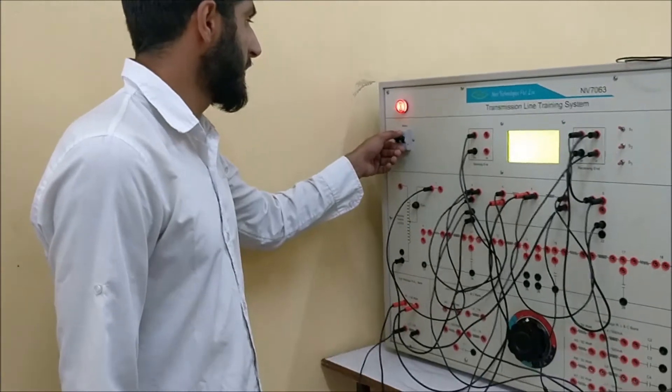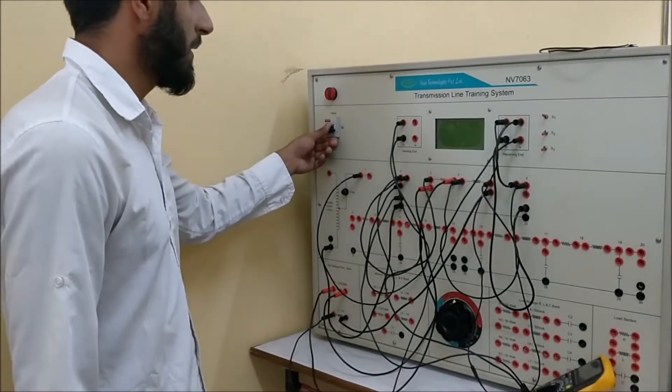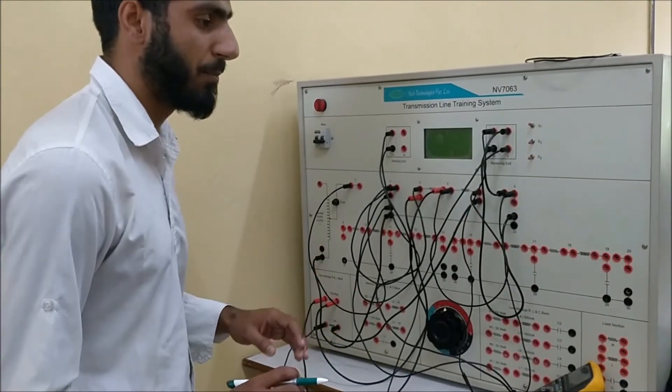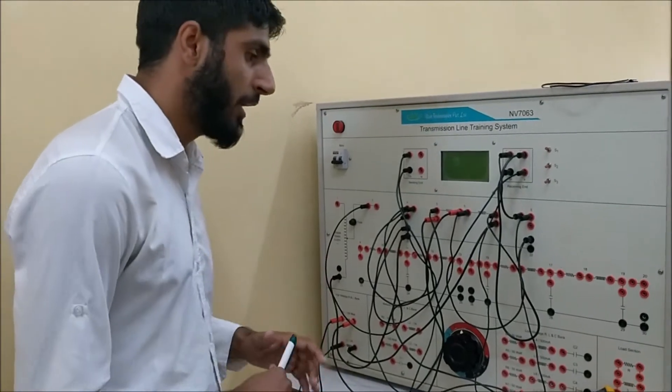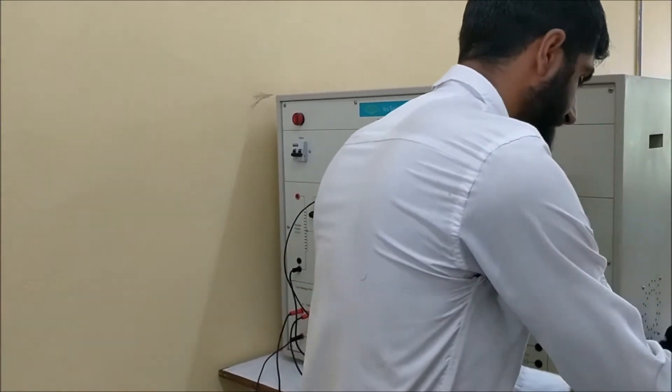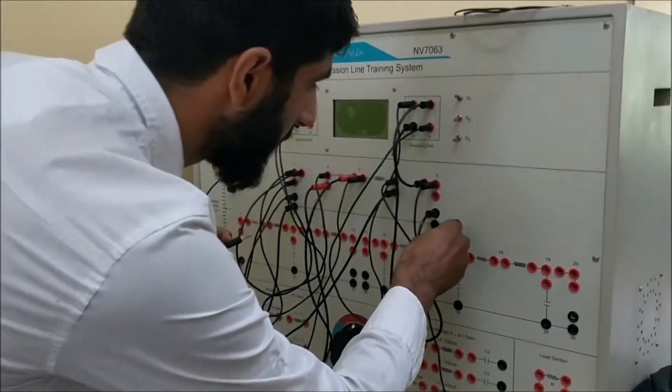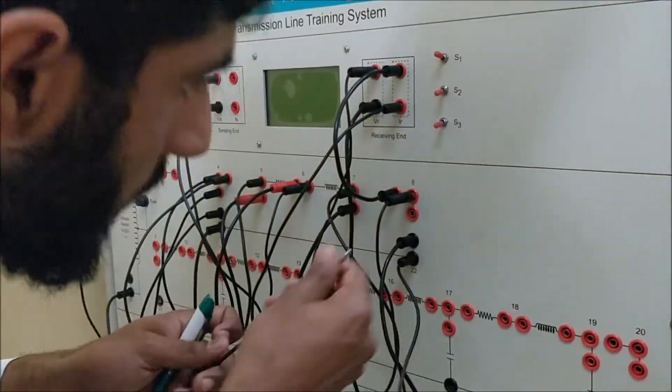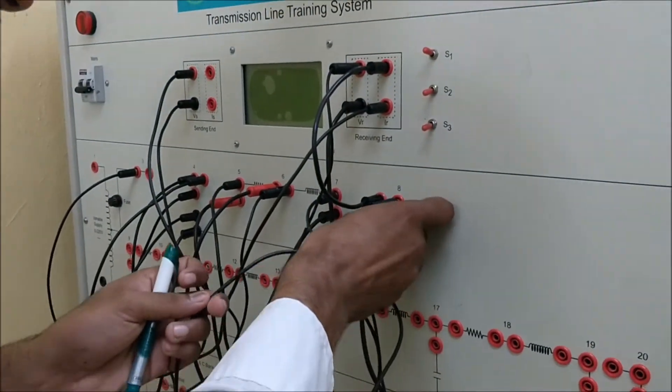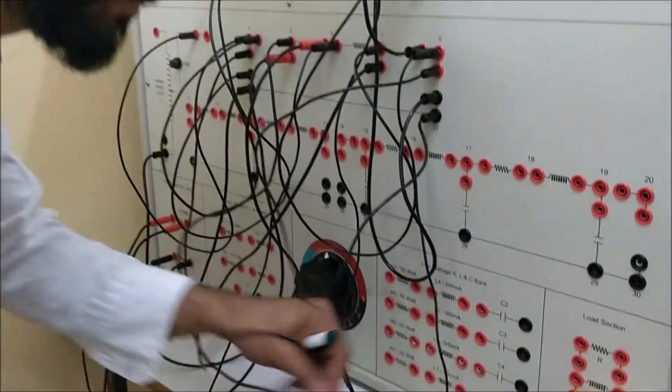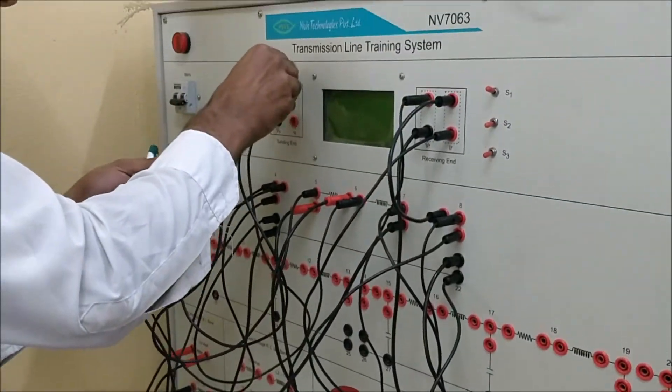Now switching off the panel to obtain the other two parameters, that is B and D from short circuit. The short circuit is done by connecting the terminals of A8 and A2. And removing this, we will connect this to current Is.